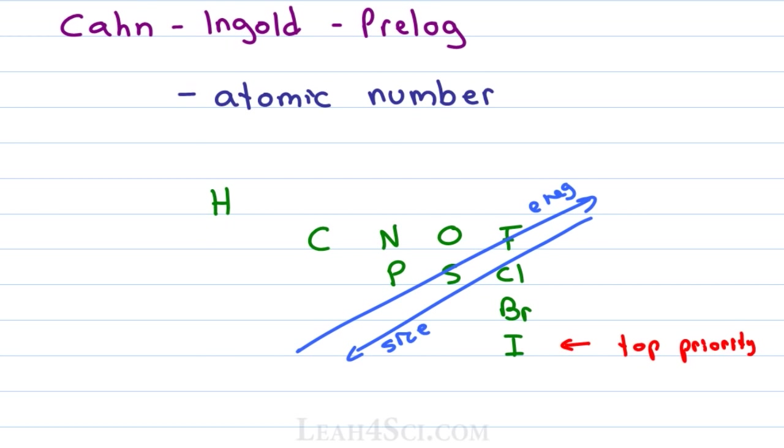The atomic numbers will increase from left to right on period and then increase as you go down the groups. This tells you that iodine is your absolute top priority if these are the atoms in your molecule. These are the 10 most common atoms so you start with iodine, then bromine, then chlorine, sulfur, phosphorus, then fluorine, oxygen, nitrogen, carbon and hydrogen is always your lowest priority.